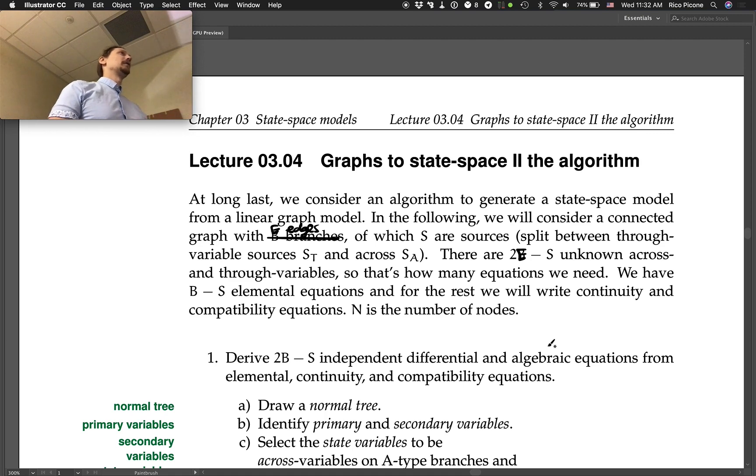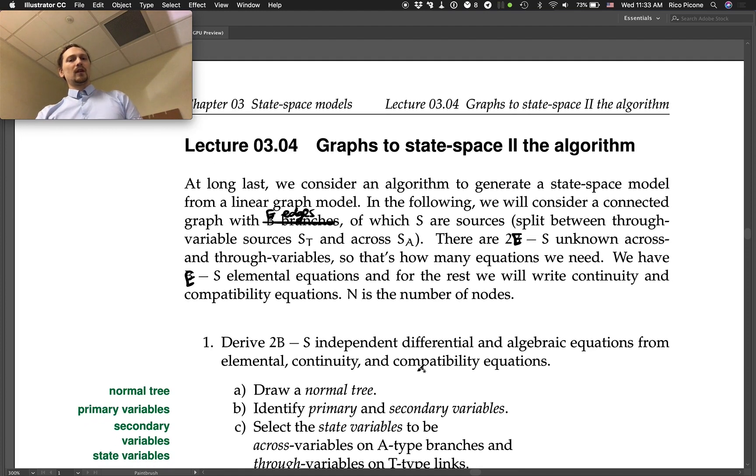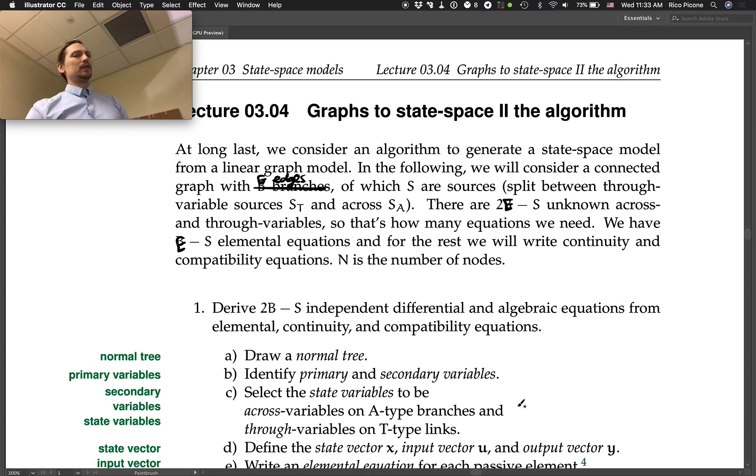This is just like how in our circuit analysis we ended up with an unknown voltage and current for every passive element in the circuit. We have e minus s elemental equations and for the rest we will write continuity and compatibility equations. N is the number of nodes.